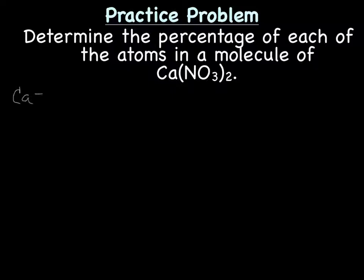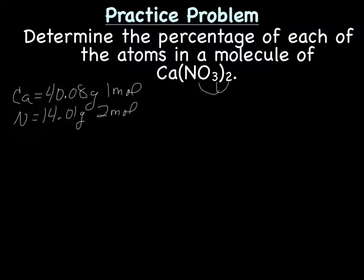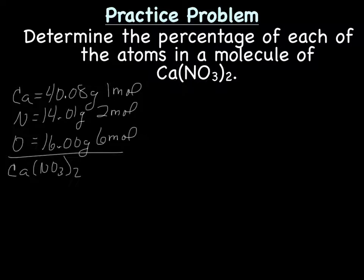We have calcium, and its mass is 40.08 grams, and we have one mole of calcium. We have nitrogen, who has a molar mass of 14.01 grams, and we have two moles of nitrogen. Remember, this number outside the parentheses distributes, which means you multiply. And we have oxygen, which has a molar mass of 16.00 grams, and we have six moles of oxygen. Now, we need the molar mass of Ca(NO3)2.